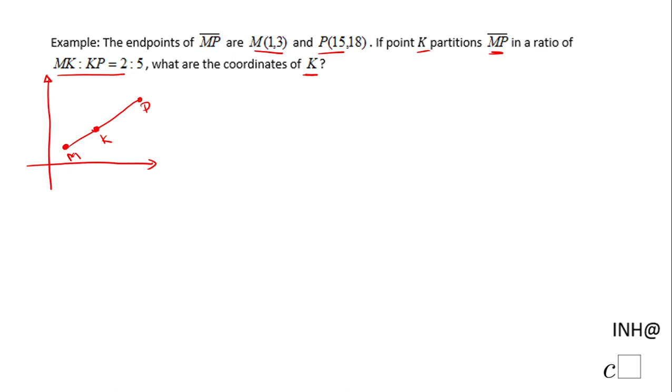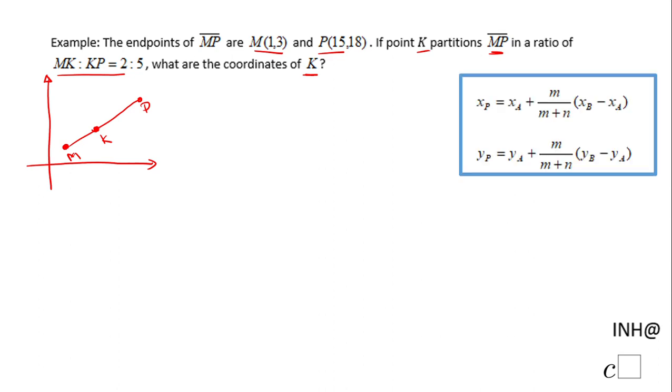Since the values of the coordinates are not friendly, I'm going to use an algebraic method using this formula. As you see here, the only difference is you need to be careful—the point that partitions the segment is called K here, so I'm going to use K. The directed line segment is MP, so this will be M and this will be P, just to be consistent with our problem.